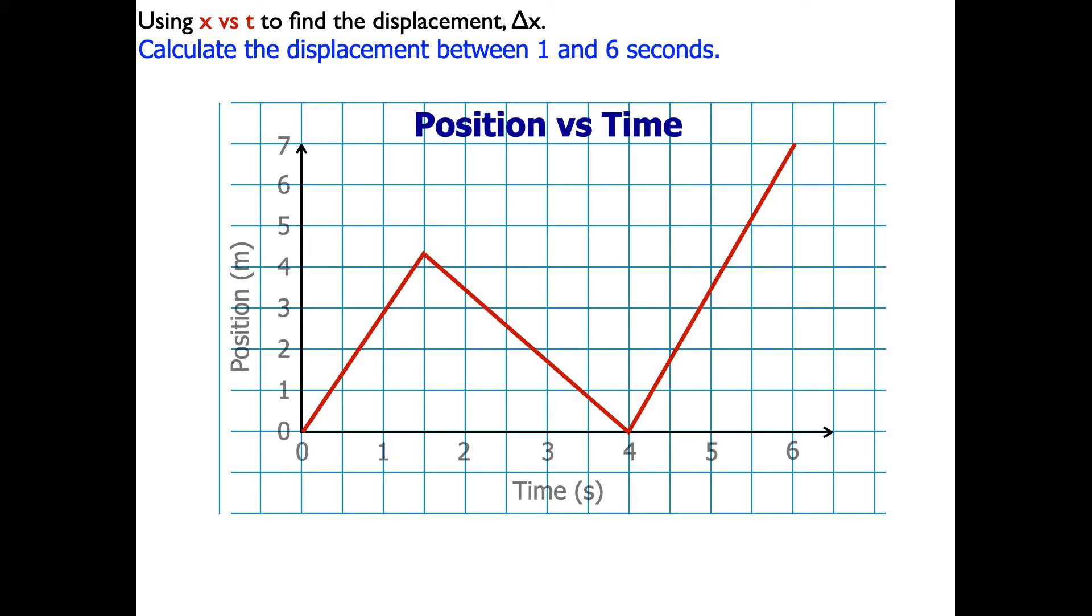So to do this, I'm going to have to find the change in position between 1 and 6 seconds. So 1 to 6. I'll go at the 1 second mark, go up until I hit the line, then go over to the position, which is 3 meters.